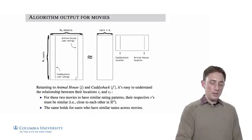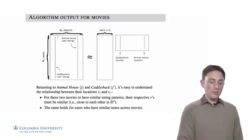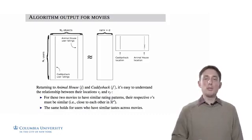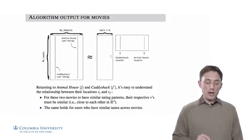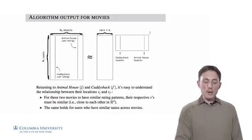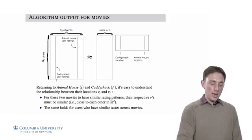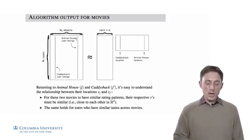We only have some of the measurements in here and here. We've run the probabilistic matrix factorization algorithm to take this missing data matrix, this matrix with many missing values, and factorize it into a product of this matrix times this matrix, where the left matrix is N1 by D, and the ith row corresponds to the location for the ith user, and the right matrix is D by N2. For example, this column corresponds to the movie Caddyshack, so the jth column here corresponds to the jth column here, and this column corresponds to the location for Animal House.